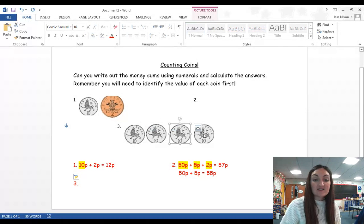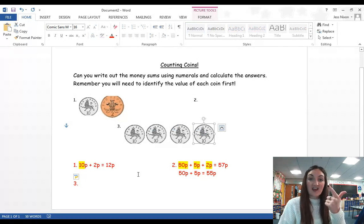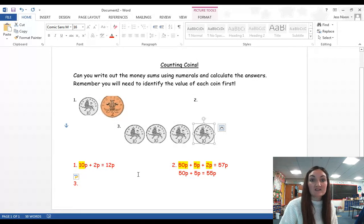10, 20, 30, 40. So, 10 pence at 10 pence at 10 pence at 10 pence is 40 pence. And you can write your number then. Well done, guys. Don't forget to send your learning in overseas.